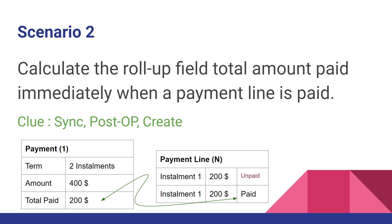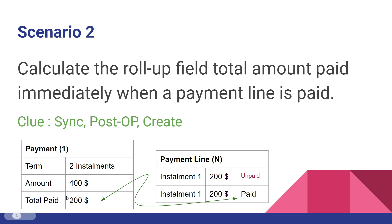Number two: calculate the roll-up field total amount paid immediately when a payment line is paid. For example, we have two tables — one is 'payment' and another is 'payment line'. When someone creates a payment record with term two installments and amount 400 dollars, the total paid is initially zero. There is a relationship between payment and payment line, creating two installment lines of 200 dollars each, both initially unpaid, so total paid remains zero.